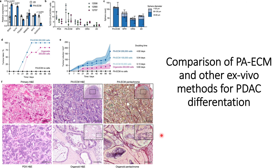Since the cancer stem cell markers are higher, there is a high probability that this will cause more proliferation of pancreatic cancer cells in PAECM. When they checked the sphere counts of pancreatic tumor sphere counts, they found that they are significantly higher in PAECM compared to other axio models such as sphere organoid or 2D culture.